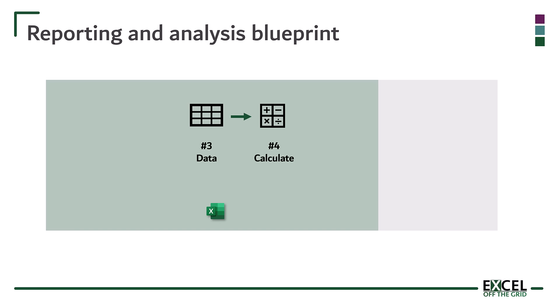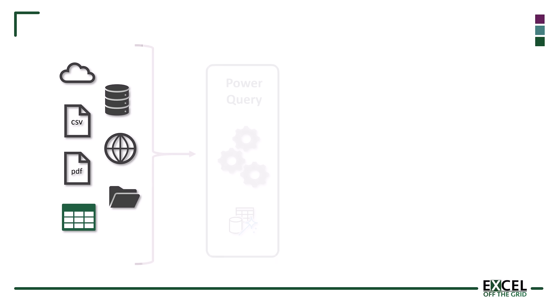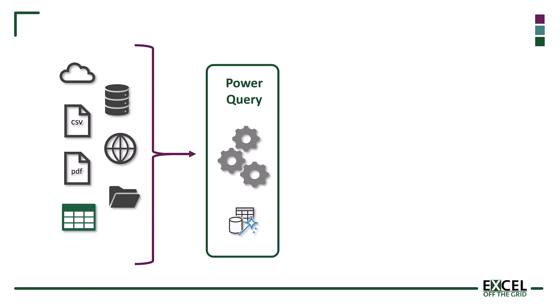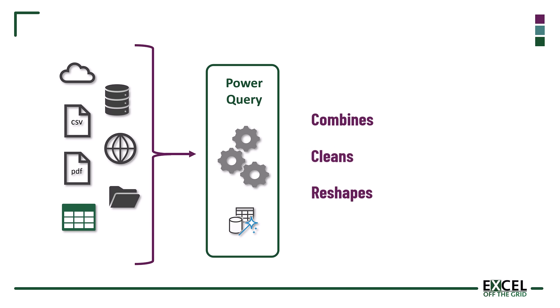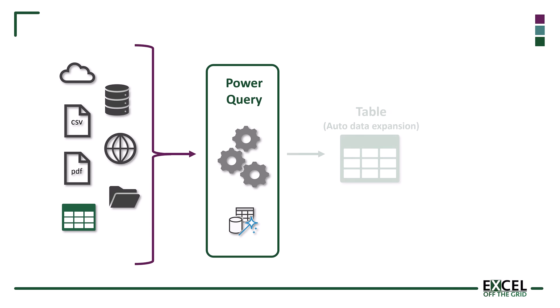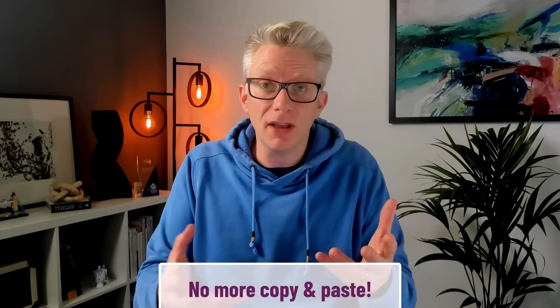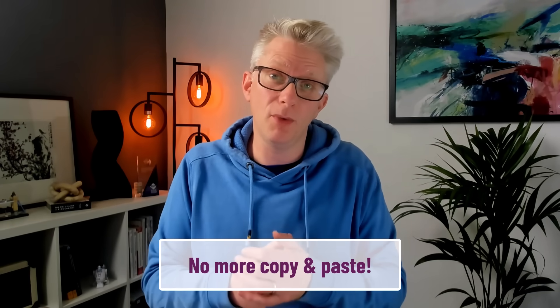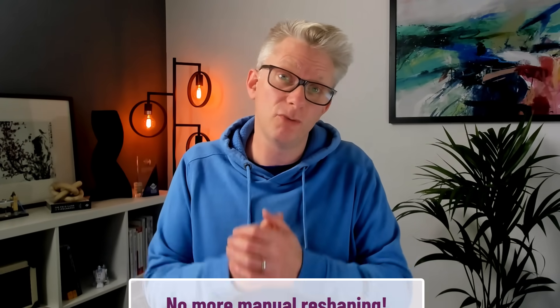Well, this brings us back to step two, which is reshape. This is the Power Query tool in Excel. It takes inputs from many different sources. It combines, it cleans, it reshapes, and provides us with the perfect data layout. Then we can load that into a table, a pivot table, or into PowerPivot — which means you don't have to copy and paste data between workbooks and you don't have to manually reshape that data. You can let Power Query do all of this work for you.